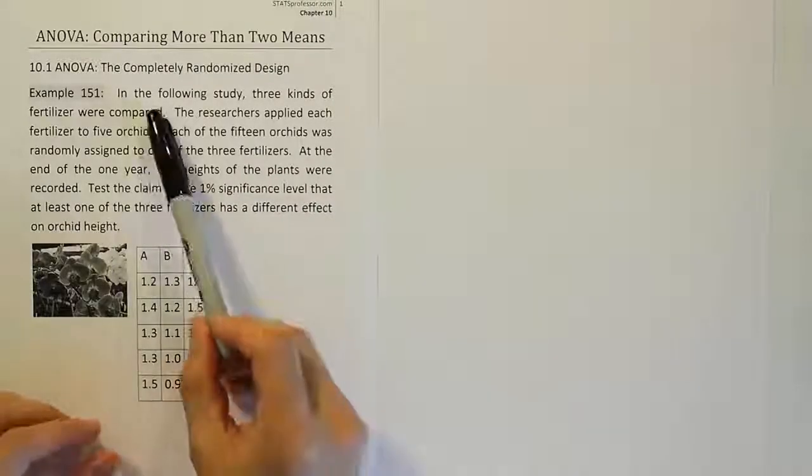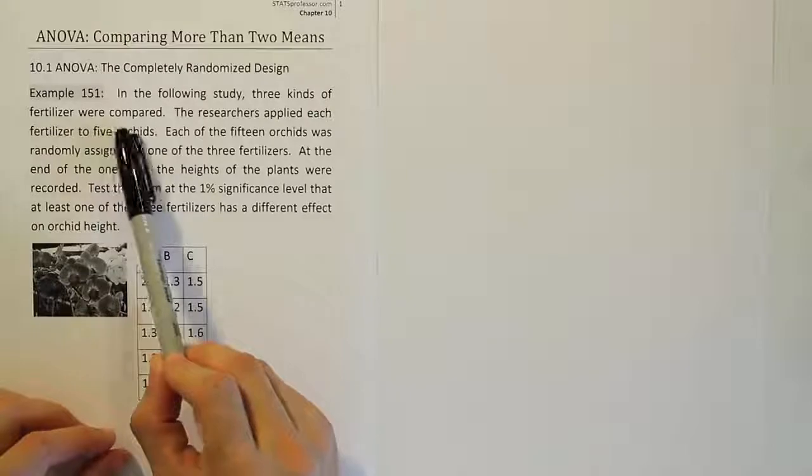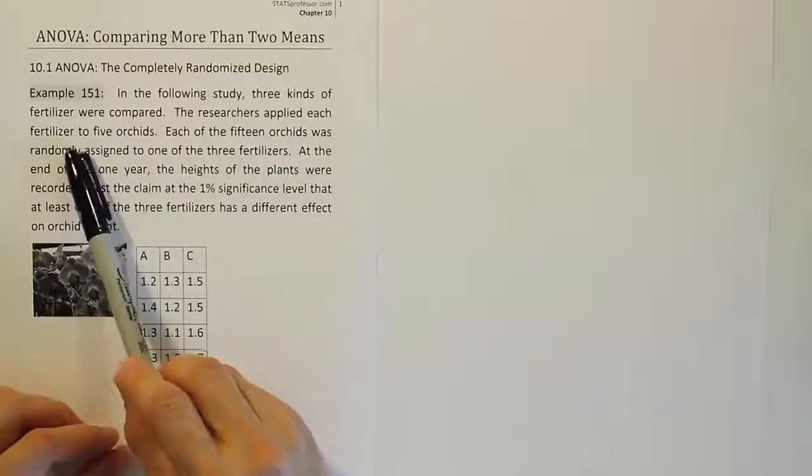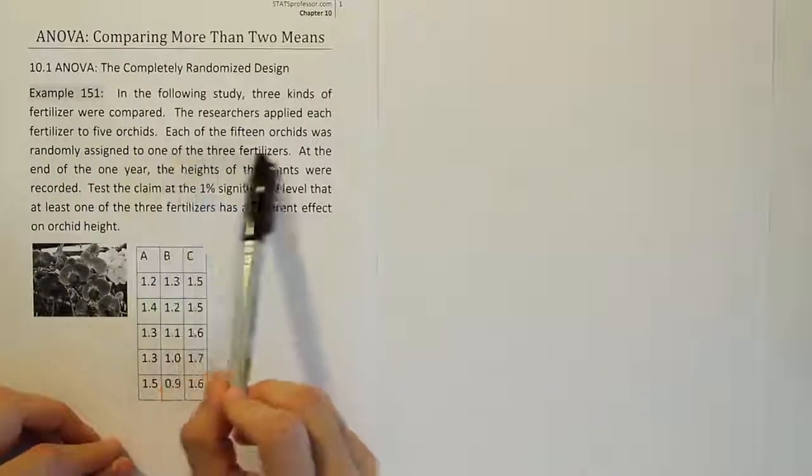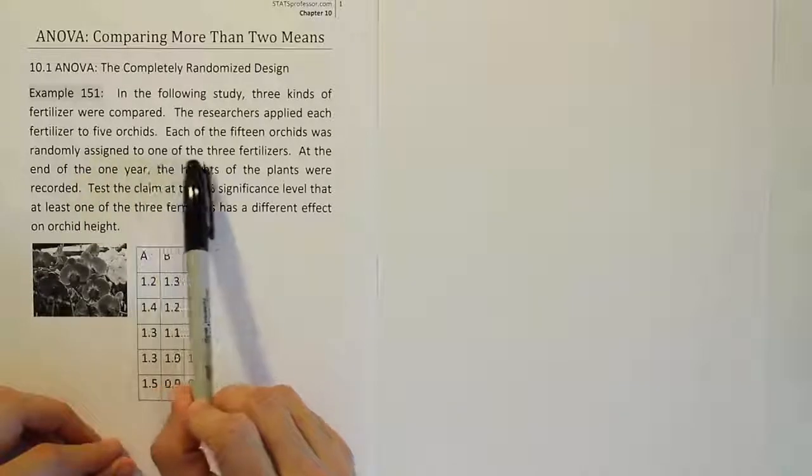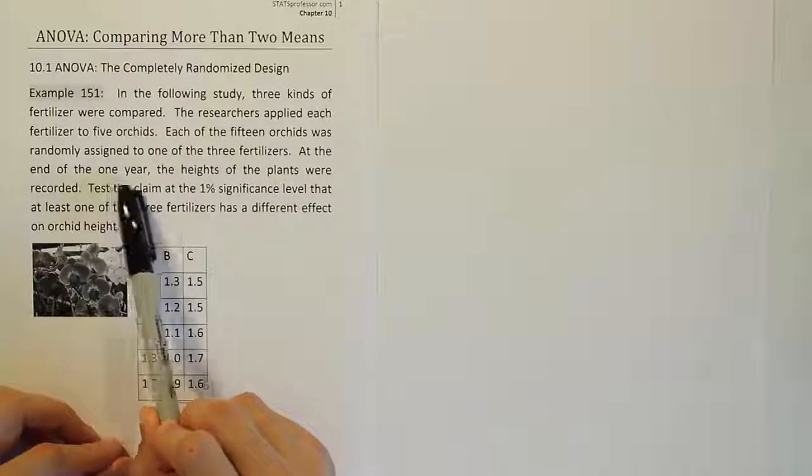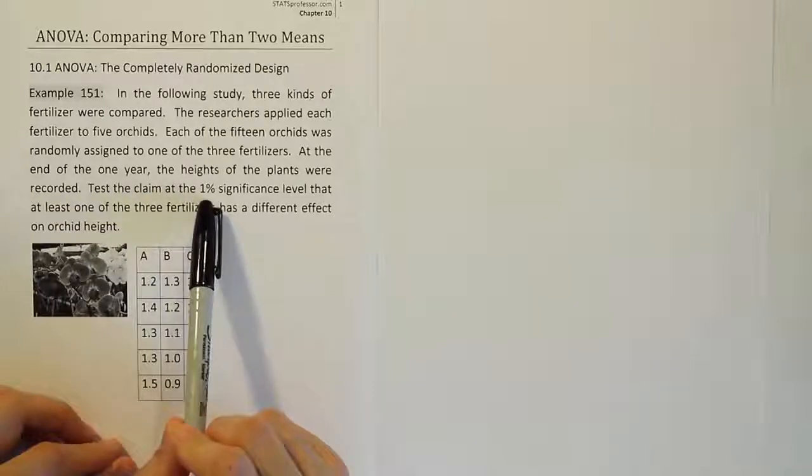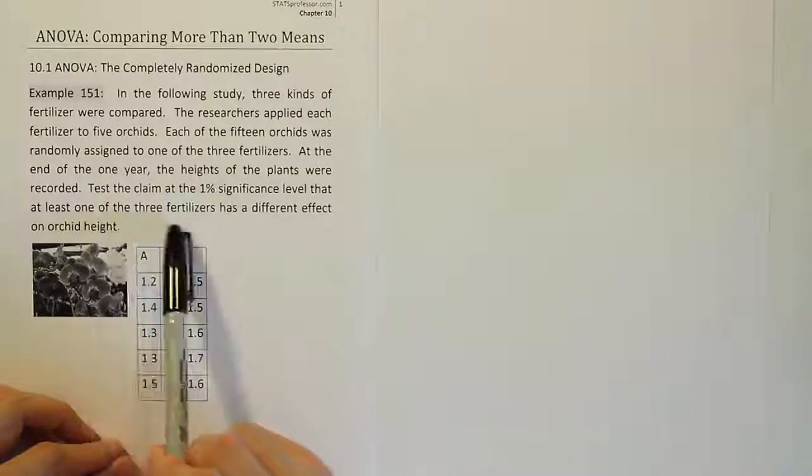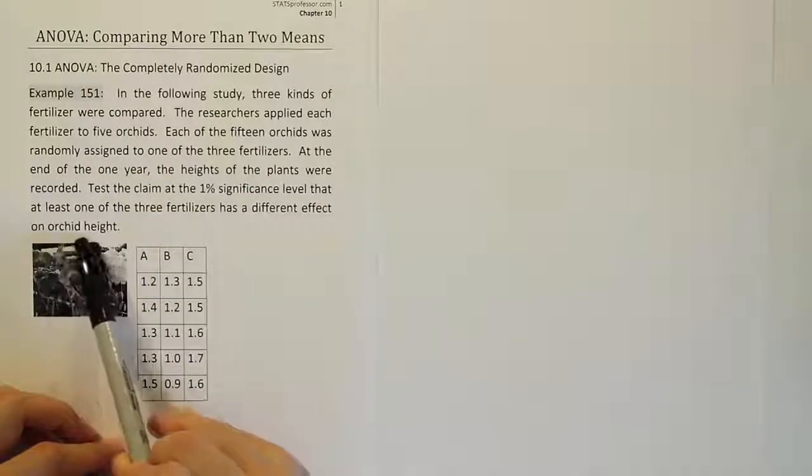Example 151. In the following study, three kinds of fertilizers were compared. The researchers applied each fertilizer to five orchids. Each of the 15 orchids was randomly assigned to one of three fertilizers. At the end of one year, the heights of the plants were recorded. Test the claim at the 1% significance level that at least one of the three fertilizers has a different effect on orchid height.